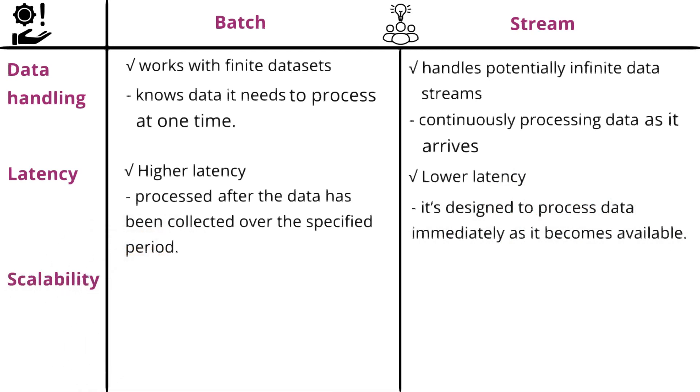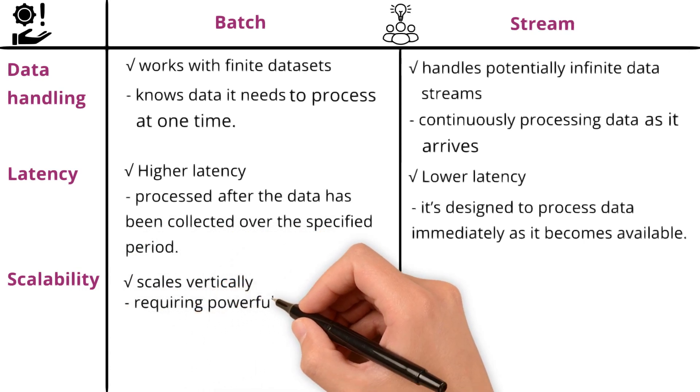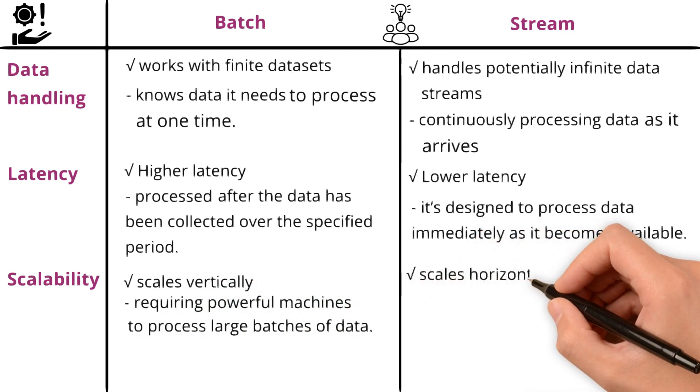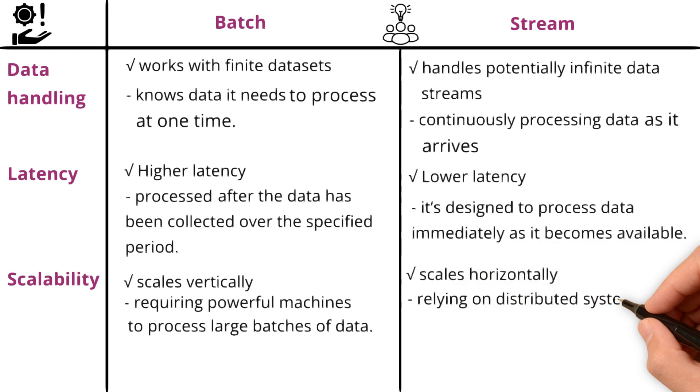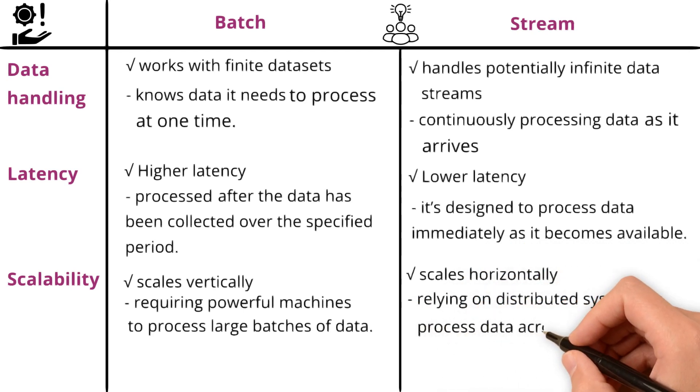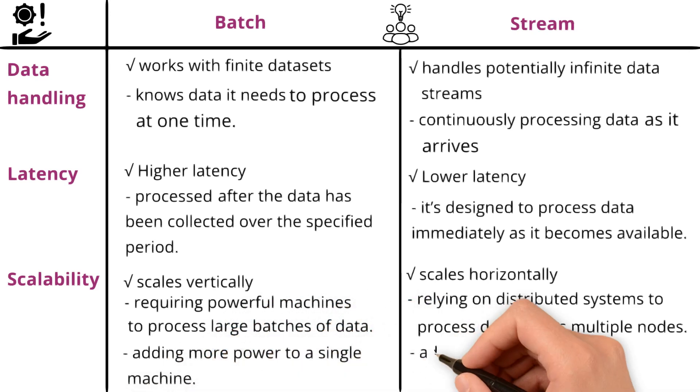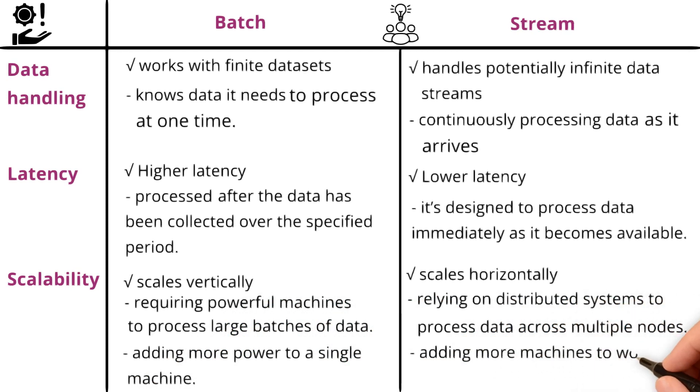Scalability. Batch processing scales vertically, often requiring powerful machines to process large batches of data. Whereas stream processing scales horizontally, usually relying on distributed systems to process data across multiple nodes. To simply put, vertical scaling involves adding more power to a single machine, while horizontal scaling involves adding more machines to work in parallel.